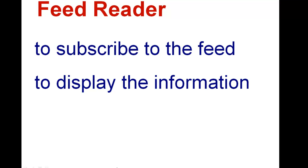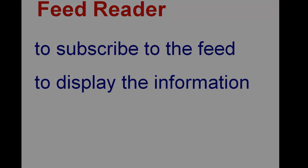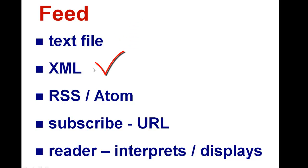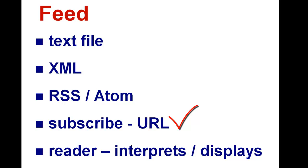You need a feed reader to subscribe to the feed. The reader interprets the XML file and displays the information. So a feed is a text file written in the XML language and it can be in either an RSS or Atom format. You subscribe to the feed by using the URL or address of the feed and the reader interprets and displays the feed.